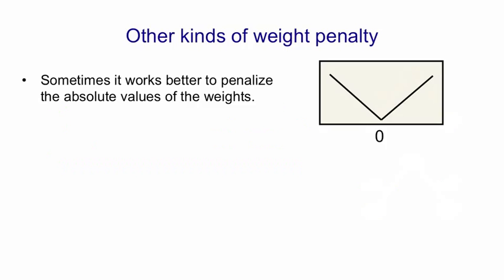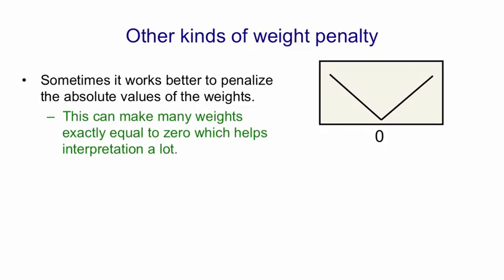There are other kinds of weight penalty. For example an L1 penalty where the cost function is just this V shape. So here what we're doing is we're penalizing the absolute values of the weights. This has the nice effect that it drives many of the weights to be exactly zero and that helps a lot in interpretation. If there's only a few non-zero weights left it's much easier to understand what's going on.